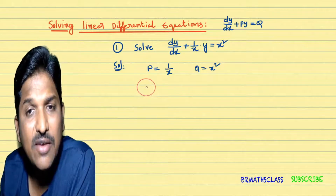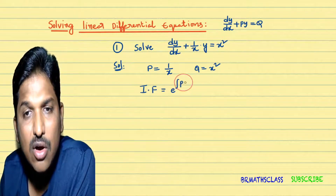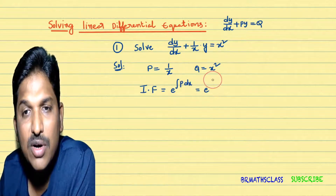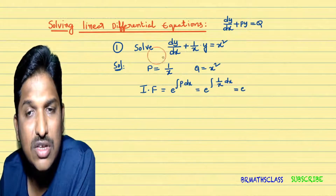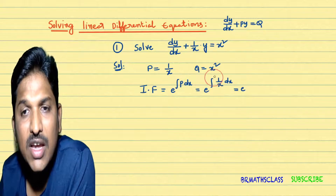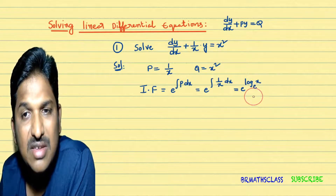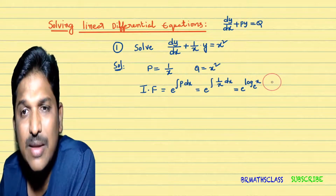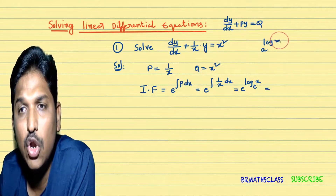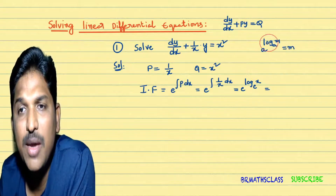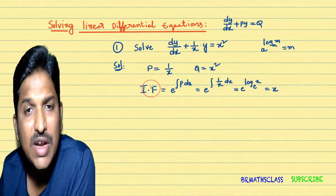Step 2: calculate the integrating factor. The integrating factor formula is e power integral of p dx. That equals e power integral of 1 by x dx. To do this problem, you must have basic knowledge of integration. Integral of 1 by x dx is log x base e. While calculating the integrating factor, we don't write plus c. From logarithms, we know the formula: a power log m base a equal to m. So e power log x base e equals x. The integrating factor is x.